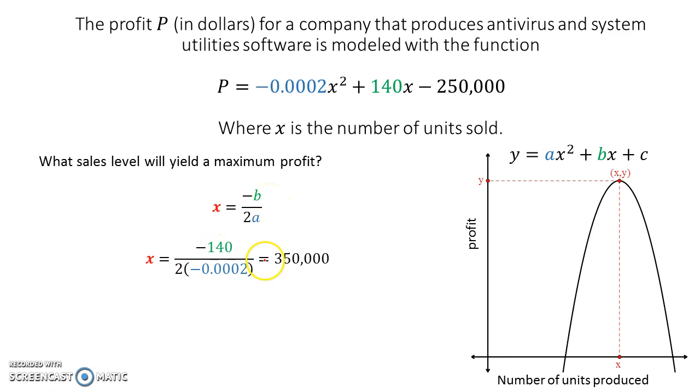And when I plug those in, I get my answer. The answer is, my goal, if I was working for this company, would be producing about 350,000 of those units.